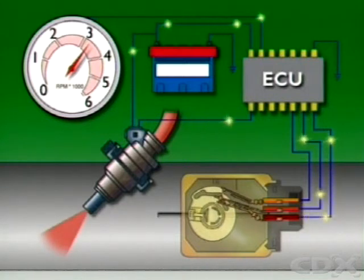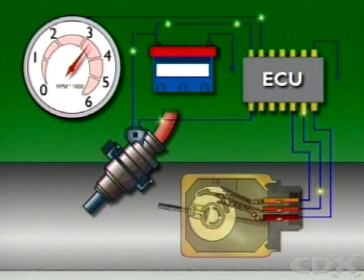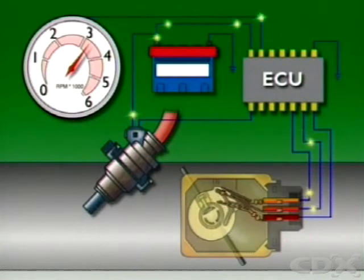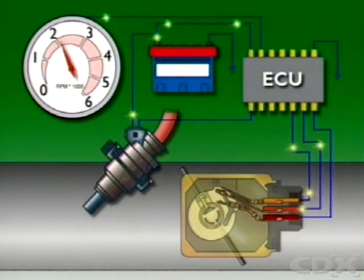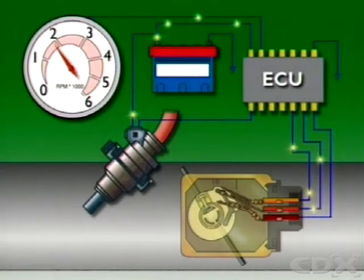If the ECU reads a figure above this and also receives a throttle closed signal, it opens the injector electrical circuit and stops fuel delivery. As RPM falls below, say, 2100 RPM, the circuit is restored.